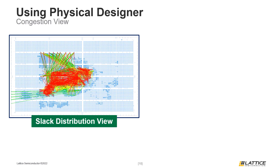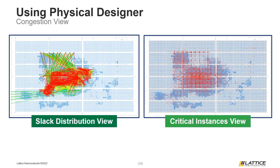The second congestion display mode is called critical instances view. In this mode, only the most critical instances in a design will be displayed. As can be seen from the figure on the slide, this mode is slightly less cluttered than slack distribution view, because it only displays the most critical instances in a path and does not display the connections between critical instances. The exact appearance of this window depends on how the timing analysis settings were configured, as the paths and instances in congestion view are color coded according to the slack thresholds. Additionally, the timing mode of analysis configured in the timing analysis settings determines whether this window displays the most critical hold or setup paths.